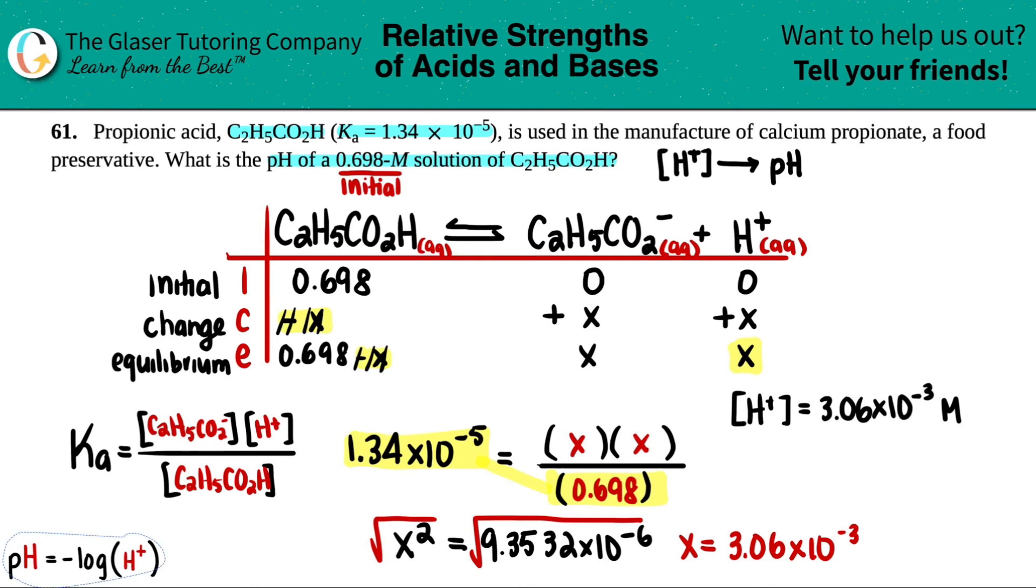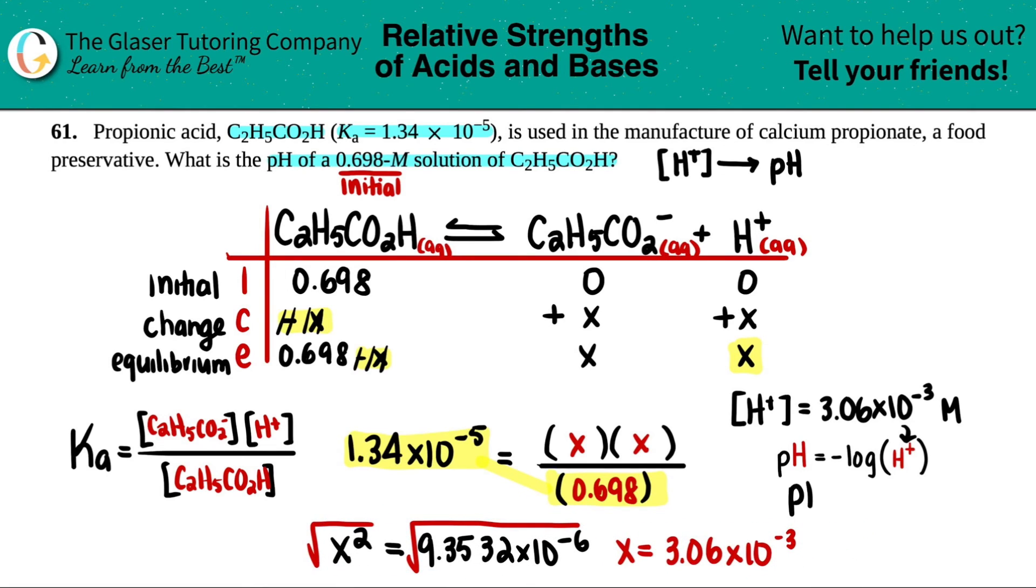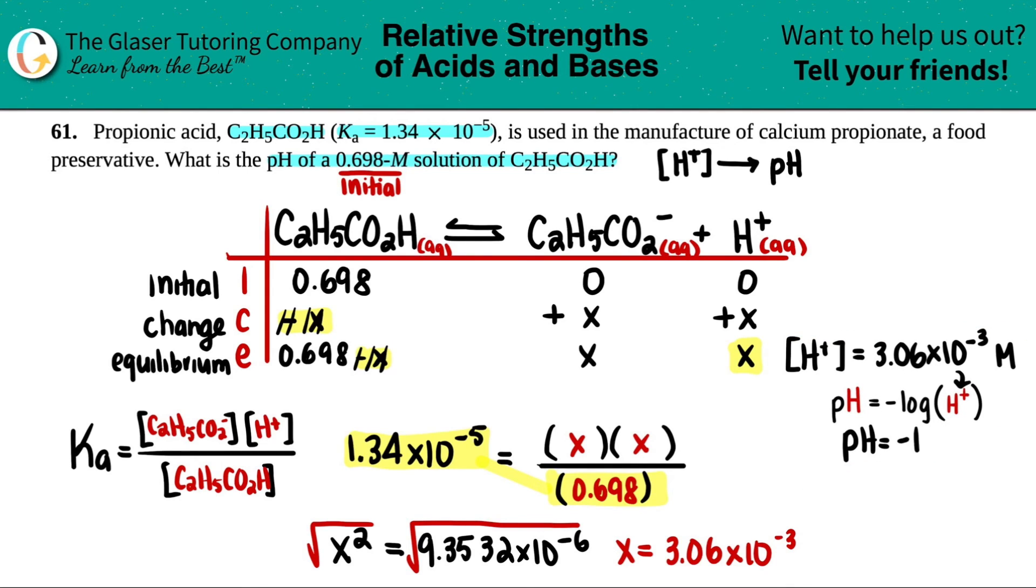So from there, I can use this equation to plug in for the pH. pH equals negative log of 3.06 times 10 to the negative third. And there we go, we're going to find our pH. Actually, technically that wasn't the answer as well, the H plus concentration, so I shouldn't have really rounded it. So maybe I'll just take it from the unrounded number, negative log of that, and I get roughly 2.51.